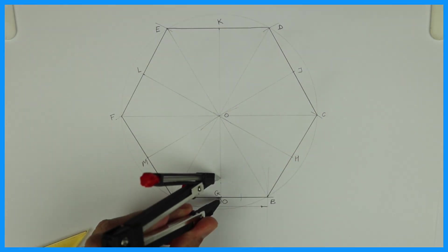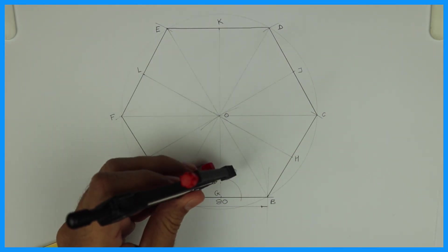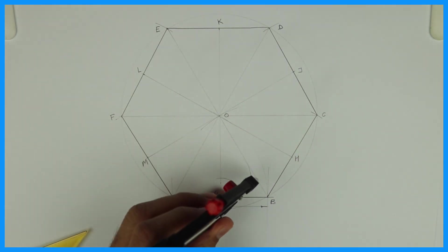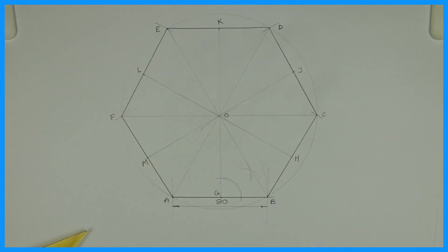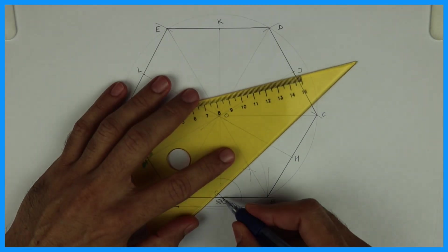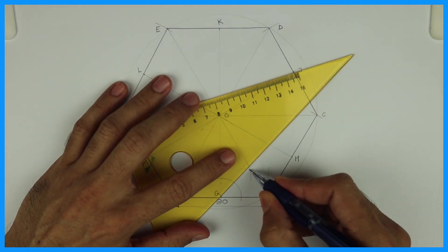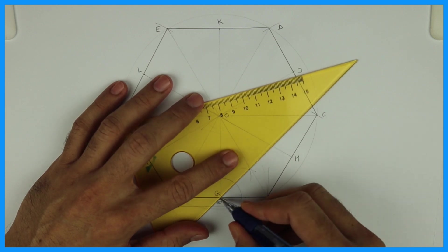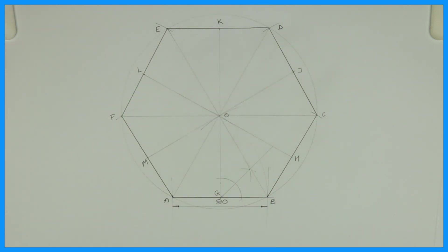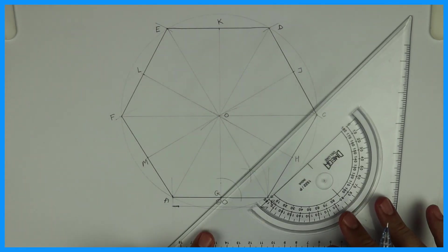Now from point G, we will draw a bisector, or we can draw 45 degrees. I'm bisecting angle OGB. See this? Or you can take 45 degrees. Wherever it will cut on OB, that is one point.